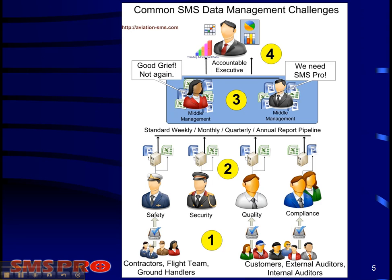In this example, department heads are in charge of managing reported issues and creating report documents for top management and board members. Documentation typically exists in the form of Excel spreadsheets, Word documents, PDFs, and paper-based reports. Whenever the accountable executive requires a report, managers must aggregate available data and try to find all the pieces to satisfy the request.